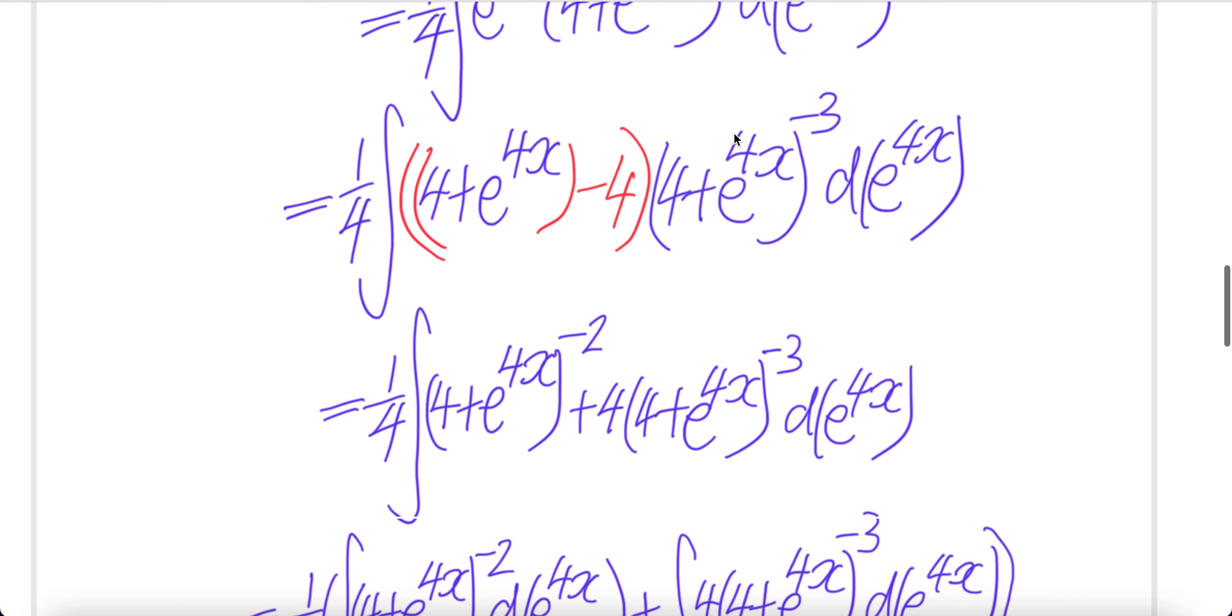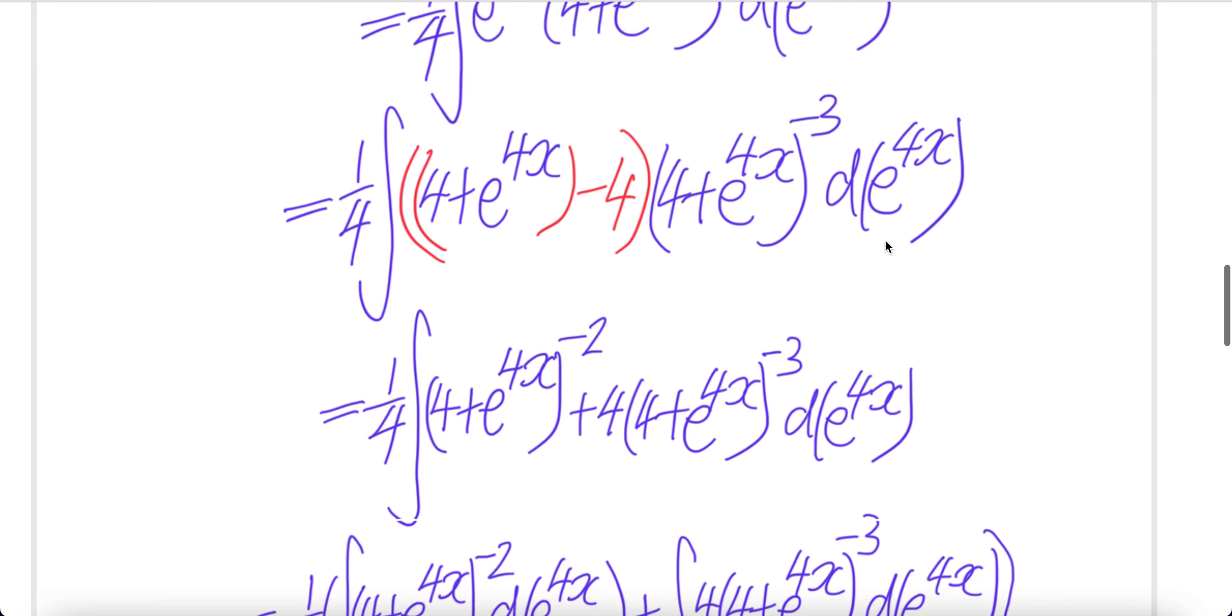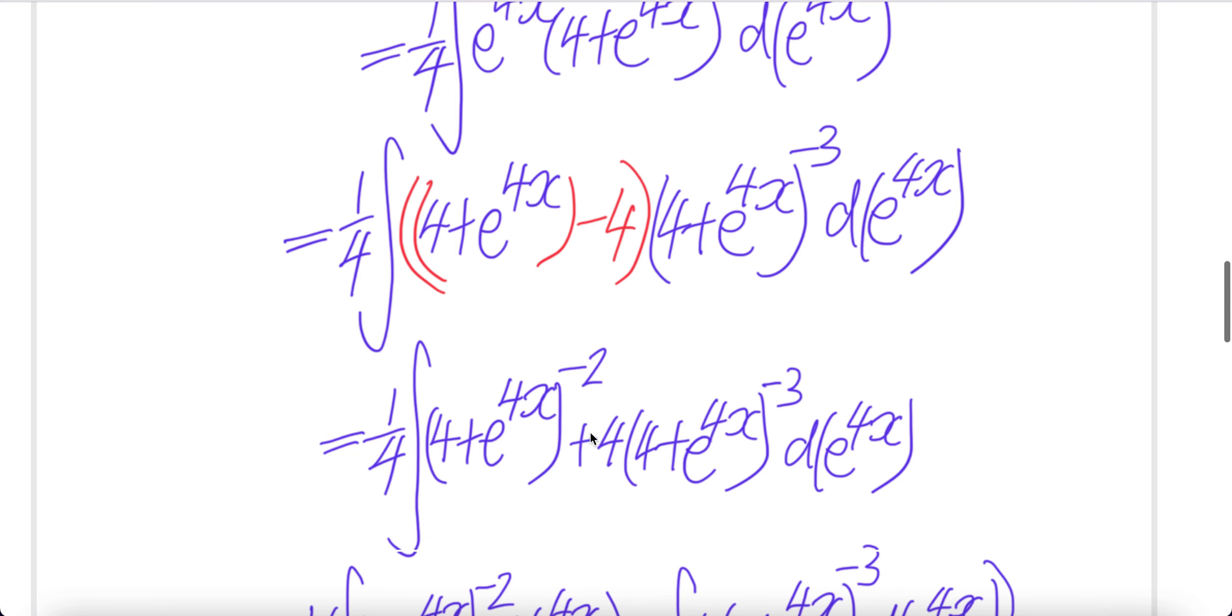Let us distribute that. You get 4 plus e to the power of 4x, 1 minus 3 is minus 2. And then this is negative. Negative 4, not here. Negative 4 times that d e to the power of 4x. This is negative, so change it to negative.